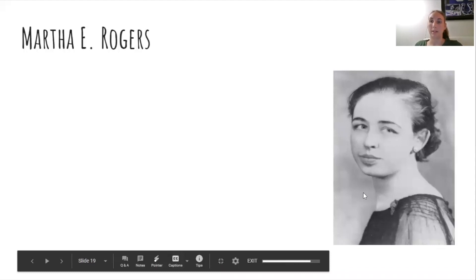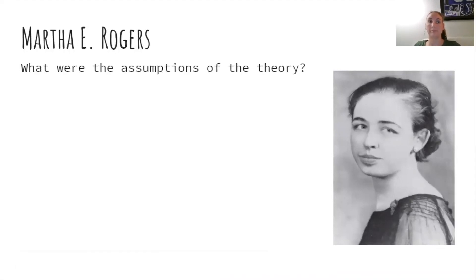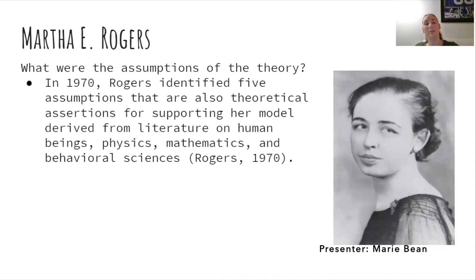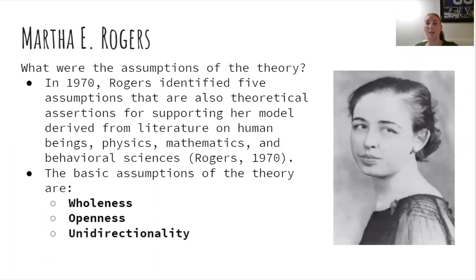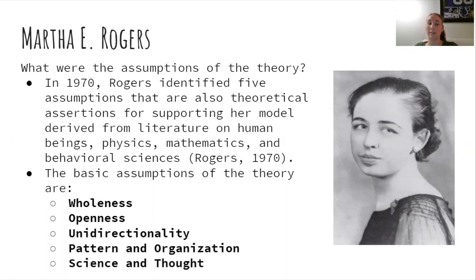Hello, my name is Marie Bean. What were the assumptions of Rogers' theory? In 1970, Rogers identified five assumptions that are also theoretical assertions supporting her model, derived from literature on human beings, physics, mathematics, and behavioral sciences. The five basic assumptions of the theory are: wholeness, openness, undirectionality, pattern and organization, and lastly, sentience and thought.